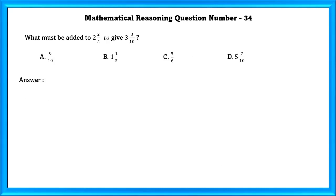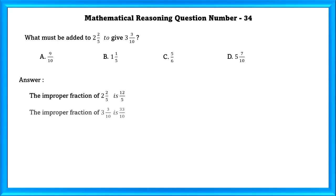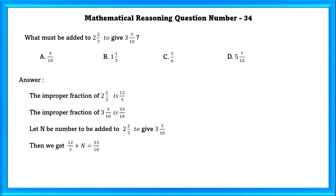Mathematical reasoning question number 34: What must be added to 2 and 2/5 to give 3 and 3/10? The improper fraction of 2 and 2/5 is 12/5, and the improper fraction of 3 and 3/10 is 33/10. Let N be the number to be added. Then 12/5 plus N equals 33/10, so N equals 33/10 minus 12/5, which equals 9/10.